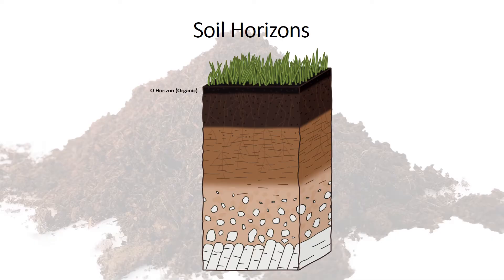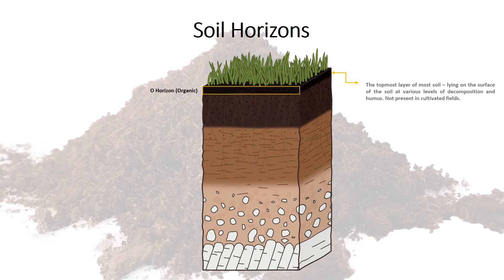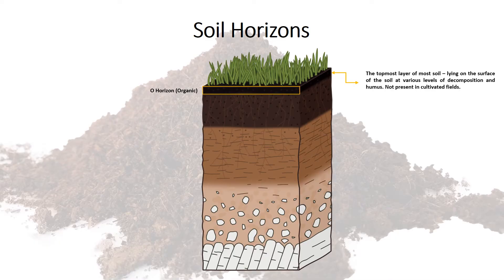The first one we are going to look at is the O horizon — organic. This horizon will not be present in cultivated fields. It is the most top layer of the soil, lying on the surface. If you go out on an uncultivated field, this is the layer you are going to see.